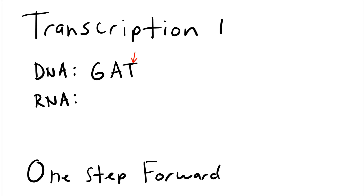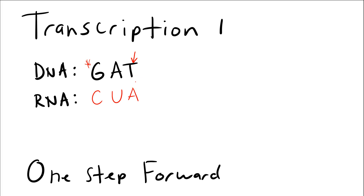Take this example: G would complementary base pair with C, A would complementary base pair with U, and T would complementary base pair with A. So for the DNA sequence GAT, you would get an RNA sequence of C, U, A — again because of complementary base pairing in this step.